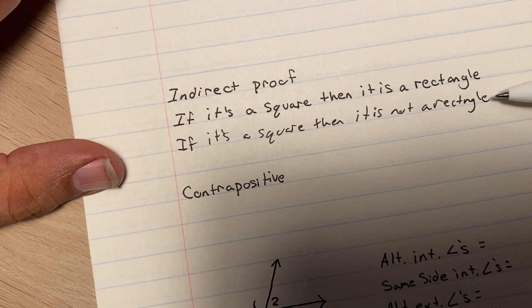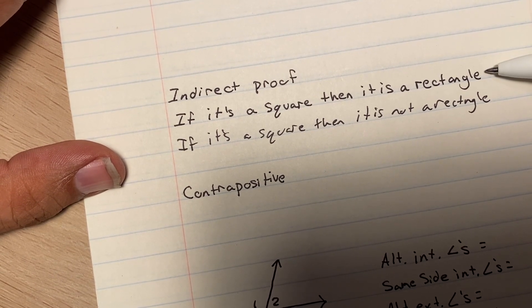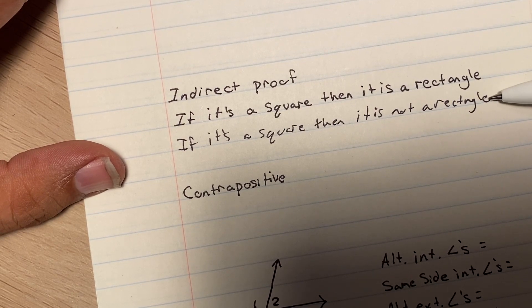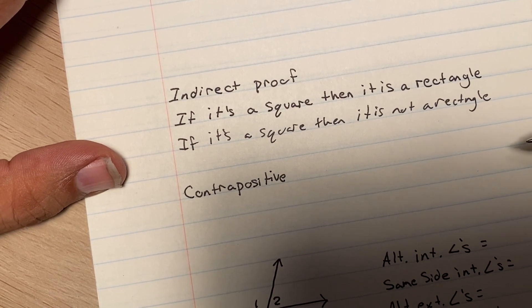Now, if I try to prove this and I can't, it proves that this statement is correct. If I prove that this one's correct, that would mean that this one is incorrect.